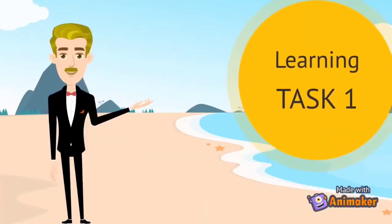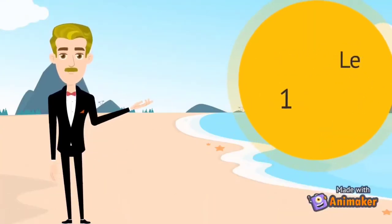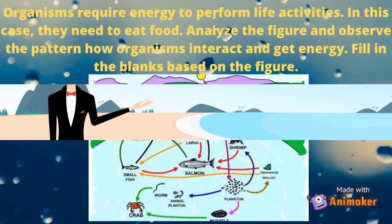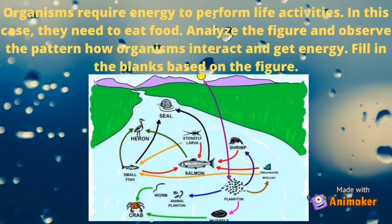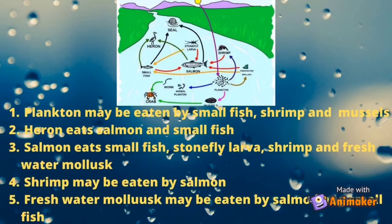Let's do learning task number one. Organisms require energy to perform life activities; in this case, they need to eat food. Analyze the figure and observe the pattern of how organisms interact and get energy. Fill in the blanks based on the figure. Number one: plankton may be eaten by small fish, shrimp, and mussels.